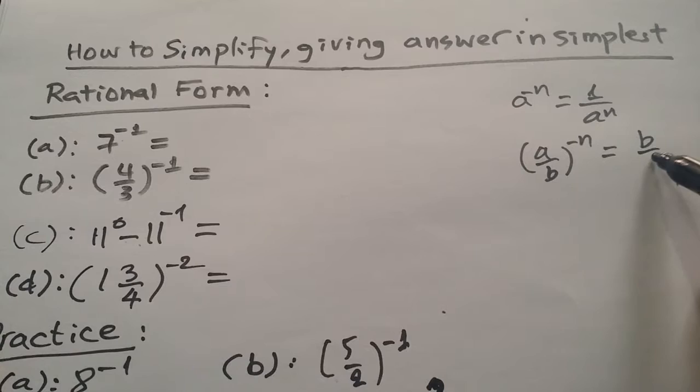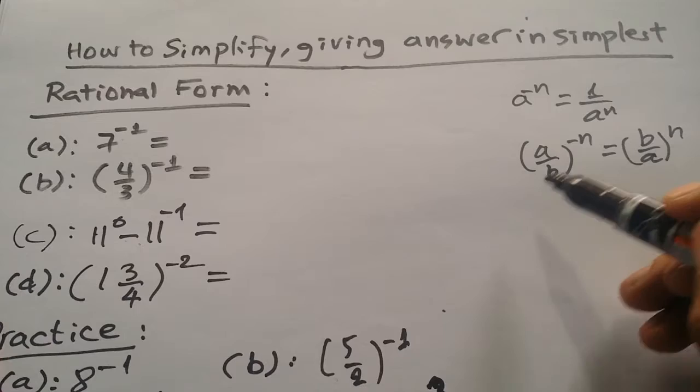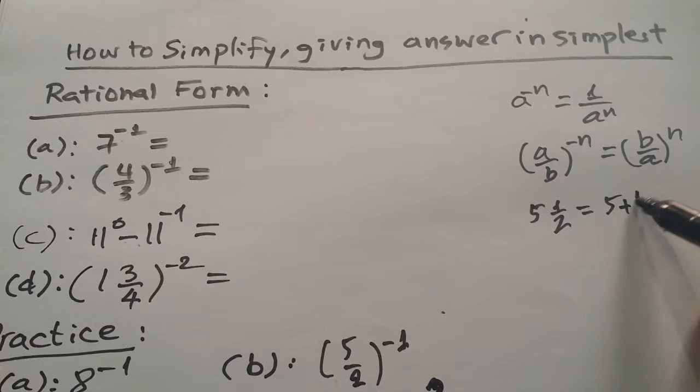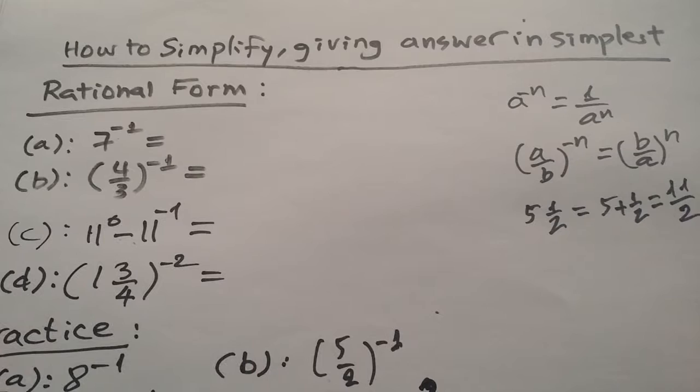We have another formula for the mixed number. For example, 5 and 1 over 2 — the mixed number must be written as 5 plus 1 divided by 2, which equals 11 divided by 2. That is the answer here.